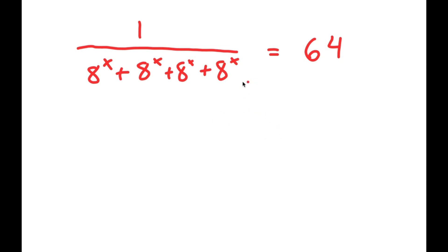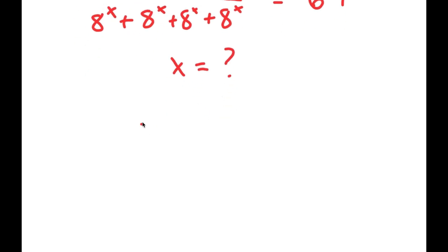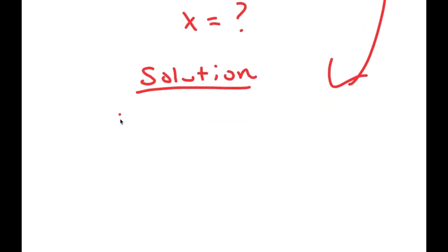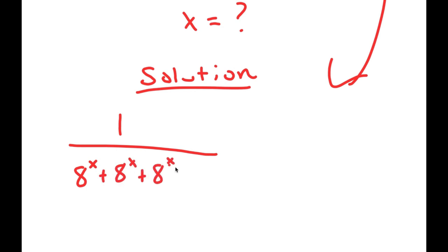In this problem, I have 1 over a to the power of x plus a to the power of x plus a to the power of x plus a to the power of x is equal to 64. So I want to find the value of x. I'll start by rewriting the equation: 1 over (a^x + a^x + a^x + a^x) = 64.